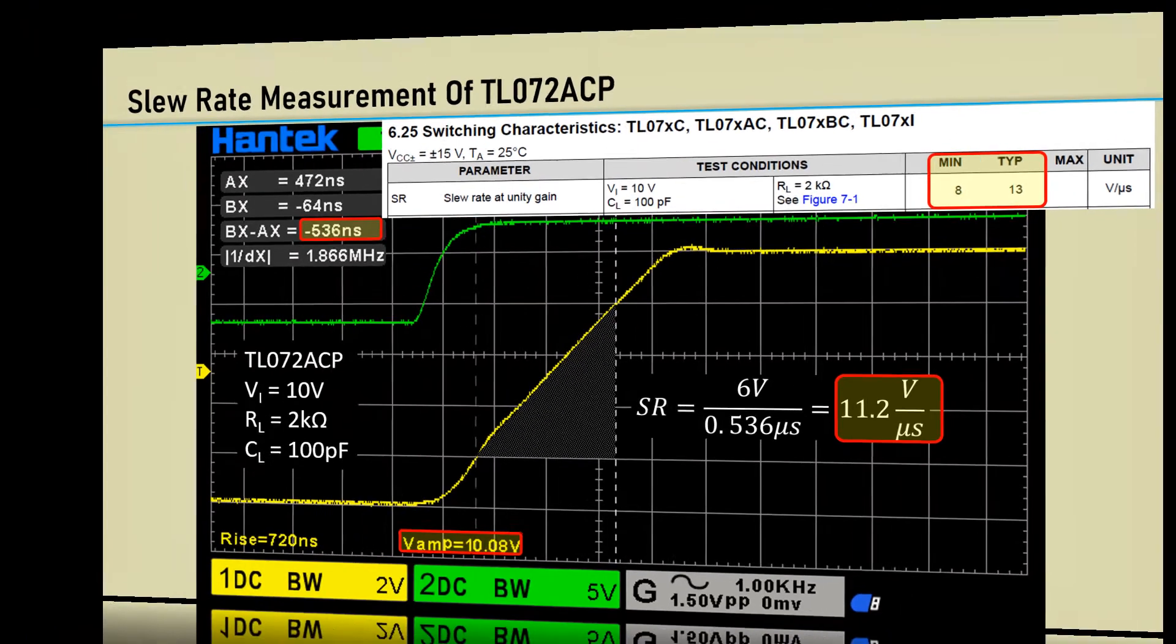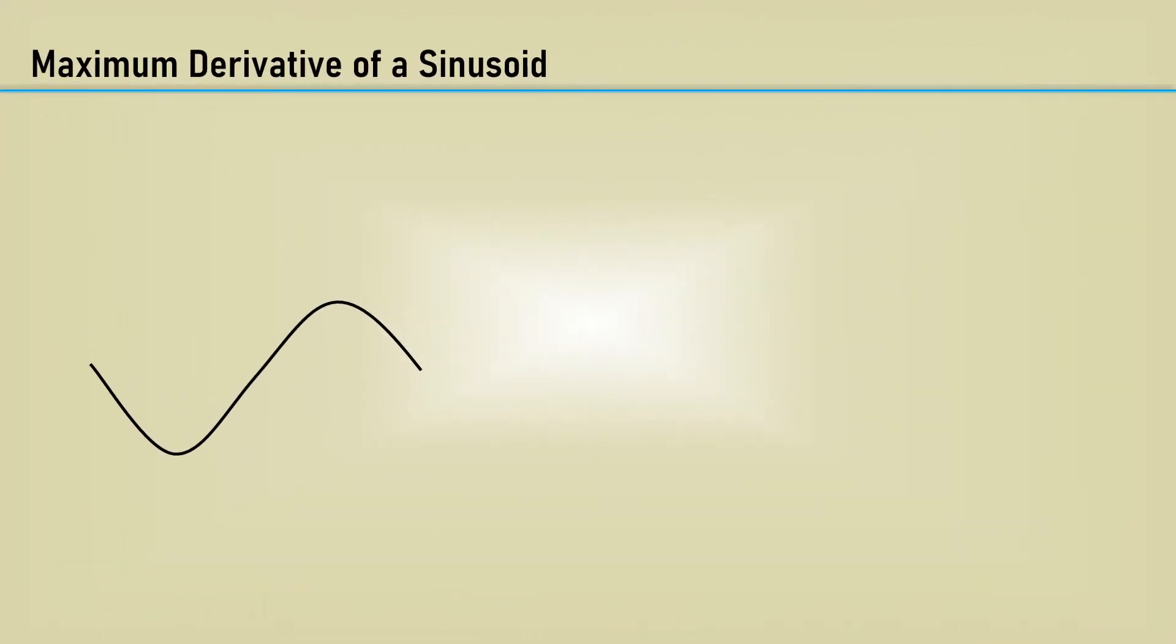So, what does this mean for us? We are usually trying to make op-amps work across a wide band of frequencies. To figure out how slew rate affects bandwidth, we need to know the rate of change of the highest frequency used in the system. The rate of change of a sinusoid is maximum at its zero crossings, so we need to know exactly what the slope is.